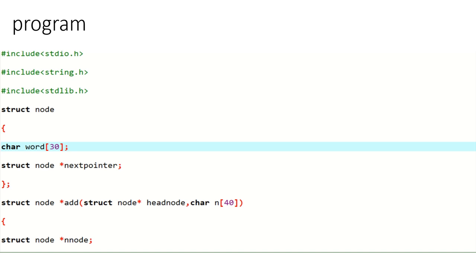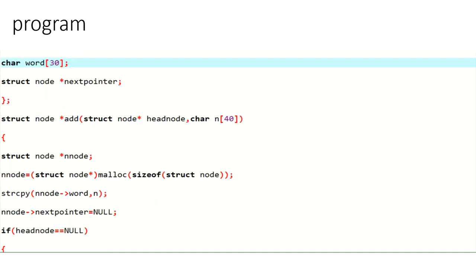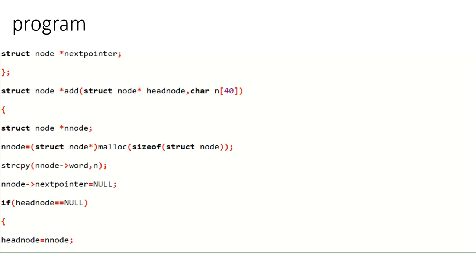The struct node is used to combine multiple items. A character array 'word' of size 30 is declared to store a string inserted into the dictionary. The struct node also has an address value. Here a node is created successfully. This is where adding a node to the dictionary takes place. The newly added element or node should be the head node.